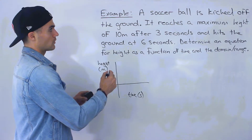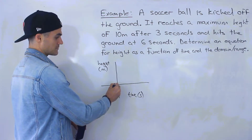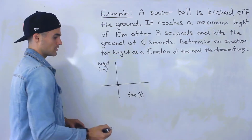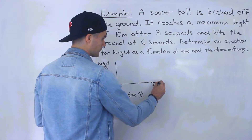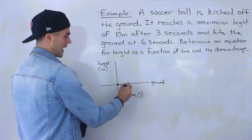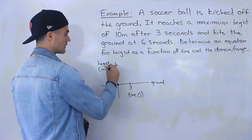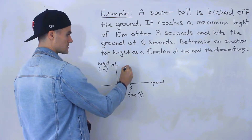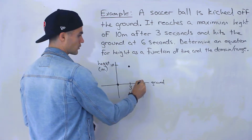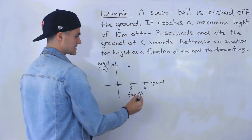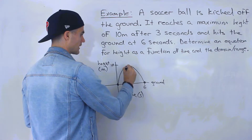Let's draw a rough graph of what's going on. The soccer ball is kicked off the ground, so at time 0 the ball is on the ground — height of 0 is the ground. After 3 seconds it reaches a maximum height of 10 meters, and then comes back down and hits the ground at 6 seconds. This is going to be a parabola.